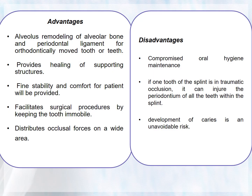Advantages of splinting include: remodeling of alveolar bone and periodontal ligament for orthodontically moved teeth, healing of supporting structures, stability and comfort for the patient, facilitating surgical procedures by keeping the tooth immobile, and distributing occlusal forces over a wide area. Disadvantages include: compromised oral hygiene maintenance, risk that if one tooth of the splint is in traumatic occlusion it can injure the periodontium of all teeth within the splint, and the development of caries as an unavoidable risk.